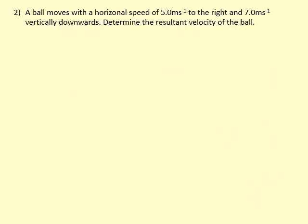A ball moves with a horizontal speed of 5 meters per second to the right and 7 meters per second vertically downwards. First, draw the diagram: 5 meters this way and 7 meters that way. Find the resultant velocity. A common mistake is to add these tip to tip and think that's the resultant—that's wrong. We need to add them tip to tail, making a rectangle like this.